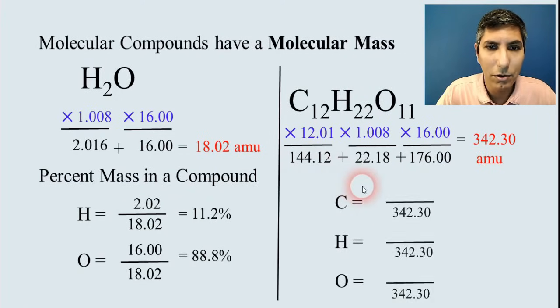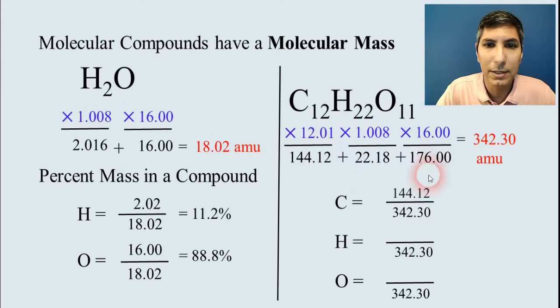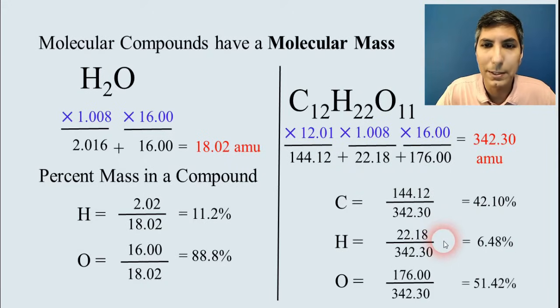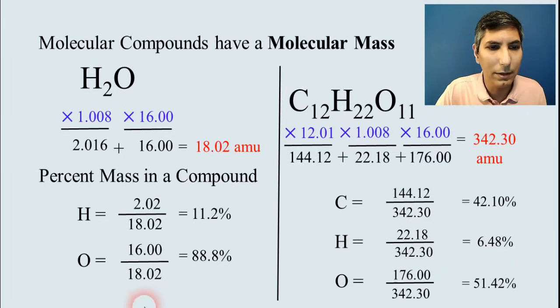Just take each of your individual totals for your individual elements and divide them by the total, and you get the percent of each element in the compound by mass. A very useful little calculation to do for your compounds.